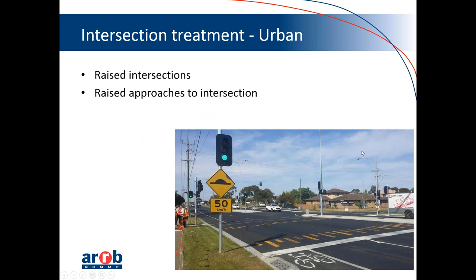Some more recent approaches include the use of raised intersections, either the intersection itself or on approach as shown in this example. This was a 70 km/h environment and we've introduced a platform on approach designed for 50 km/h, so vehicles are expected to slow to that speed. We're finding a reduction of around eight kilometres per hour in this environment and quite a substantial reduction in crashes from our reviews. This is actually a high-volume arterial with a major intersection, and we're getting quite good acceptance from the public, mainly because we've put in place education programs around its use.